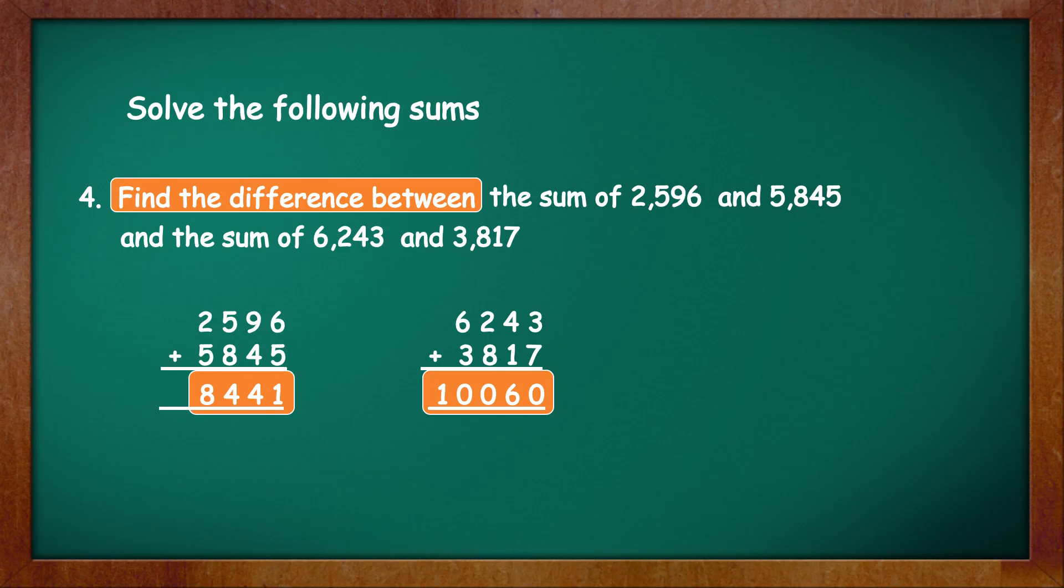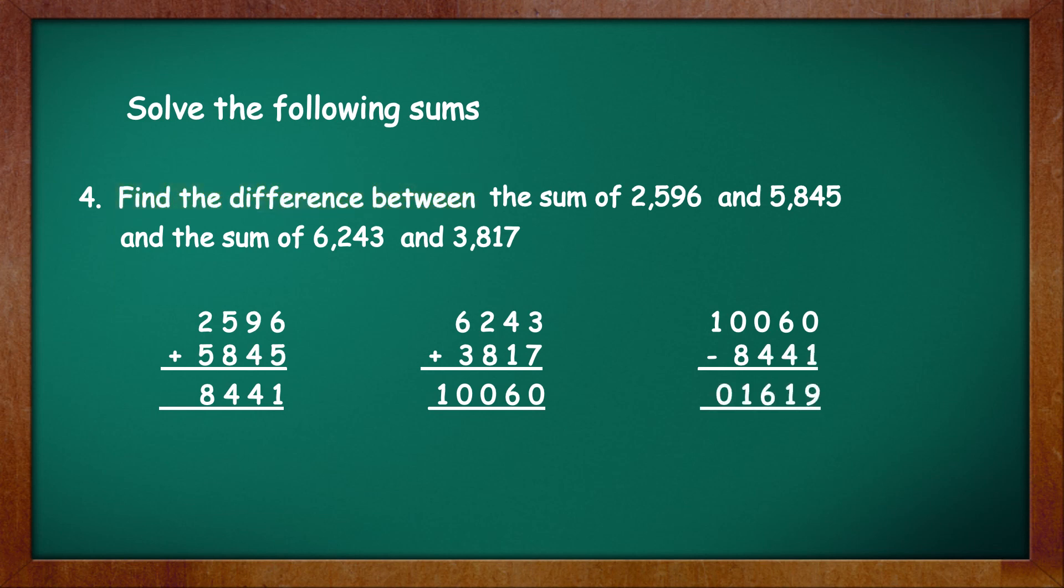Here, you must remember that when you subtract to find the difference, you always write the greater number minus the smaller number. The greater number here is 10,060 minus the smaller number 8,441, which is equal to 1,619. The answer is equal to 1,619.